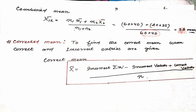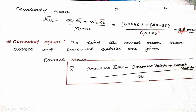Sometimes they may ask you to calculate the corrected mean. The formula for corrected mean is: incorrect sum of all observations minus incorrect value plus correct value, divided by n (number of terms). That is how you can calculate the corrected mean.